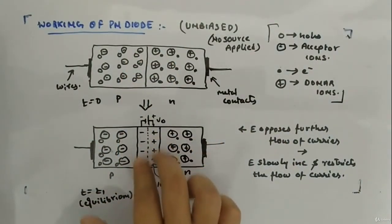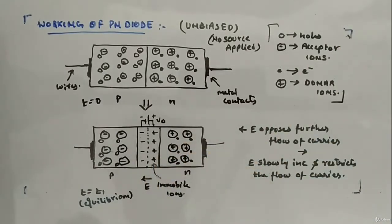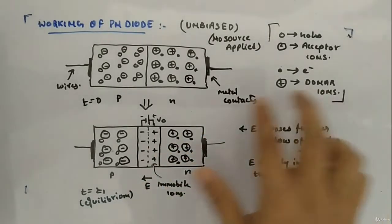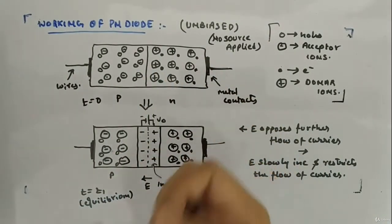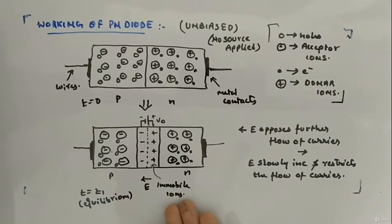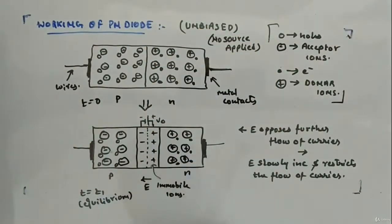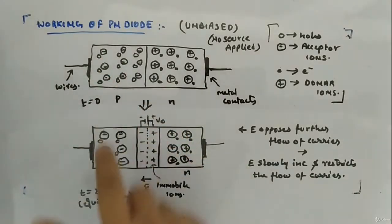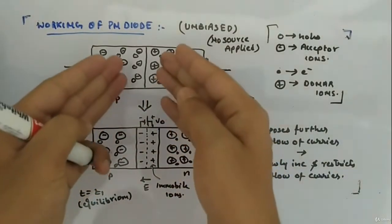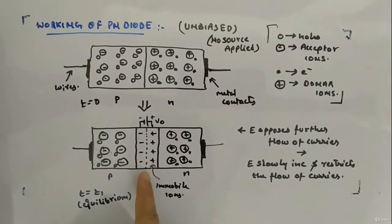The only things left are the negative and positive ions — the acceptor ions and donor ions. But now they are called immobile ions because they can't move on their own; the carriers, electrons and holes, are gone. They made their bonds and left negative and positive ions near the junction. This dotted line is the junction. So some electrons and holes merged, made bonds, and disappeared, leaving negatives and positives near the junction — that's how the PN junction is made.